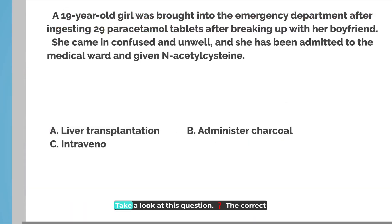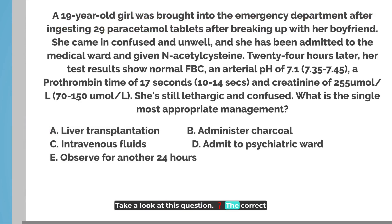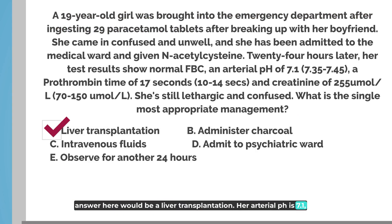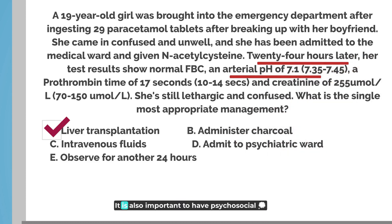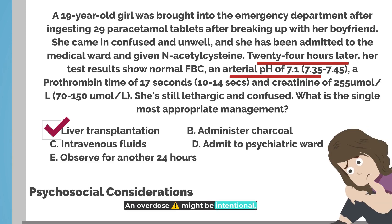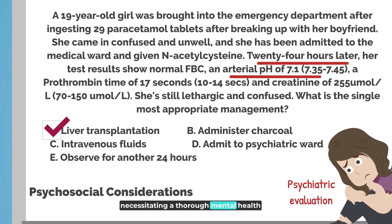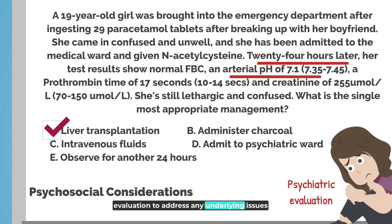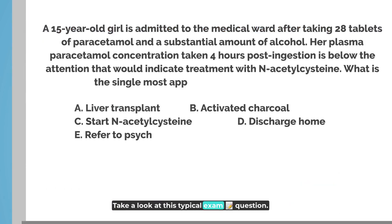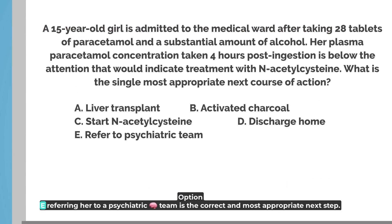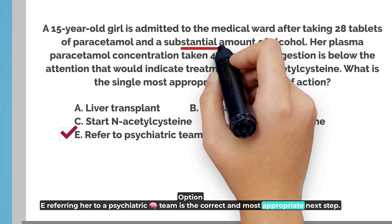For example, take a look at this question. The correct answer here would be A, liver transplantation. Her arterial pH is 7.1, which is an indication for liver transplantation. It is also important to have psychosocial considerations. An overdose might be intentional, necessitating a thorough mental health evaluation to address any underlying issues and to strategize prevention of future incidents. Referring her to a psychiatric team is the correct and most appropriate next step.